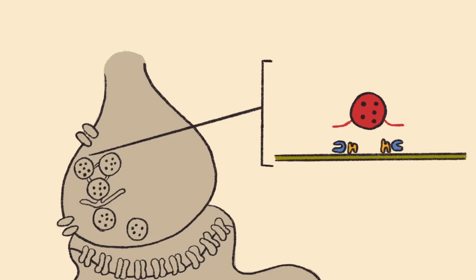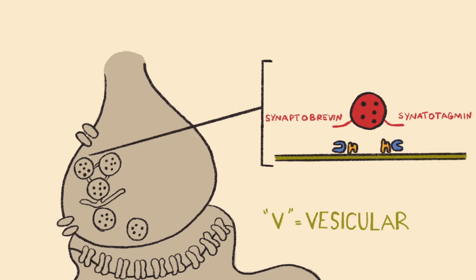On the vesicle membrane, there is one V-snare, Synaptobrevin, and also a calcium binding protein called Synaptotagmin. V stands for vesicular, which makes sense because the snare protein is on the vesicle membrane. Synaptotagmin is a calcium sensor that gets tagged with calcium.